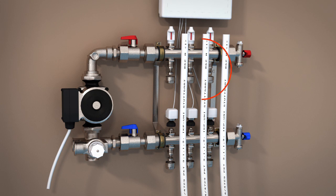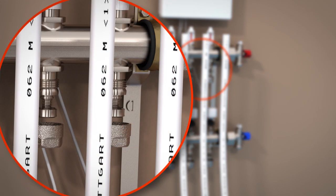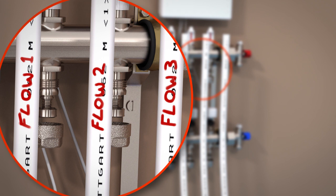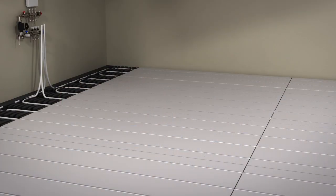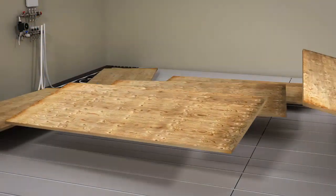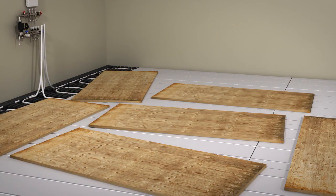Once the pipe installation is complete, ensure the pipe flow, return and loop number is clearly marked to ensure mistakes are not made when connecting to the manifold or pump. At this stage, it is a good idea to protect your installation by placing boards down where you are expecting heavy traffic to prevent damage to the pipe work.